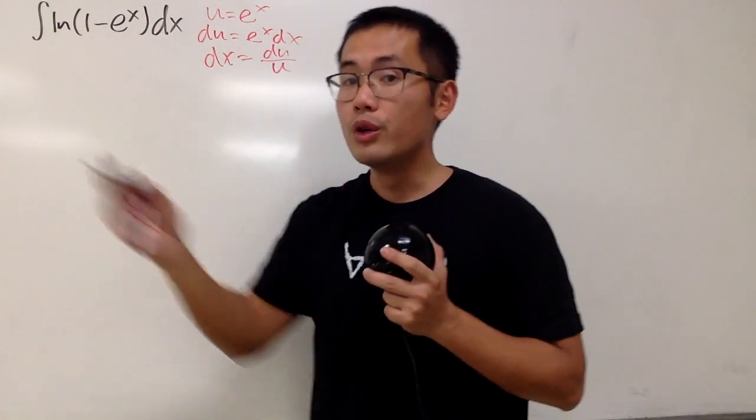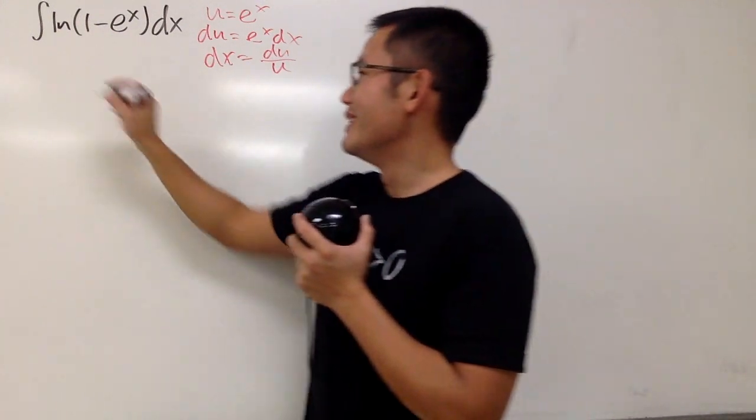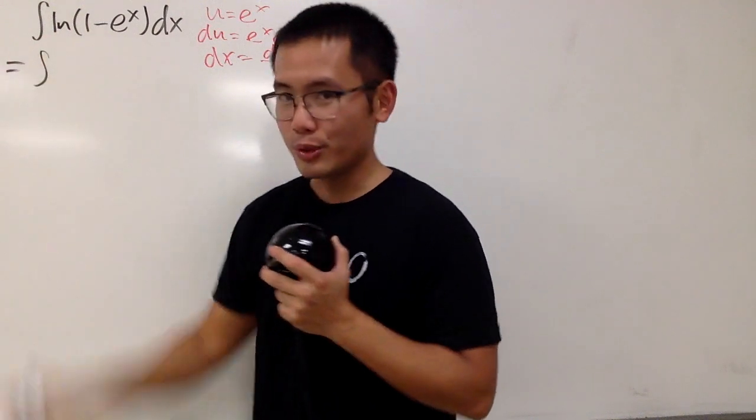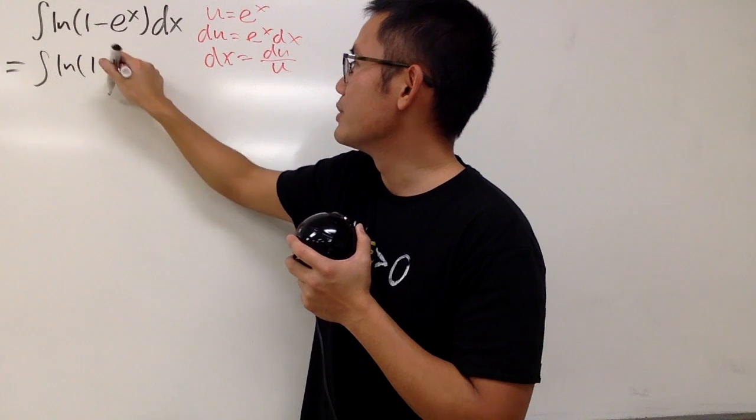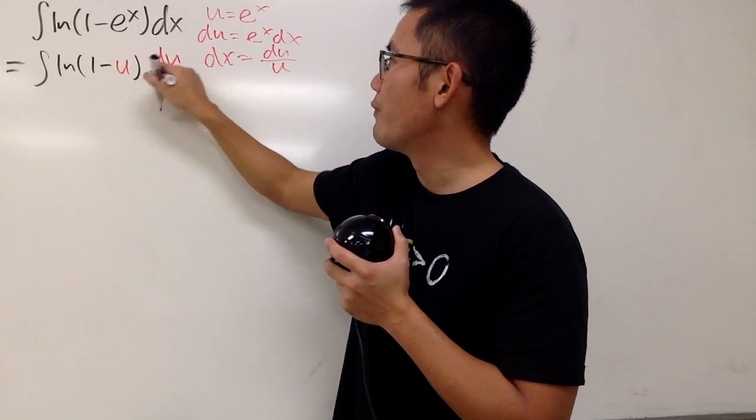And now, we'll take this integral to the, not Disney World, but the u world. I know, Christmas is coming, but let's go to the u world anyway. This is the integral ln of 1 minus u, and this right here is du over u.